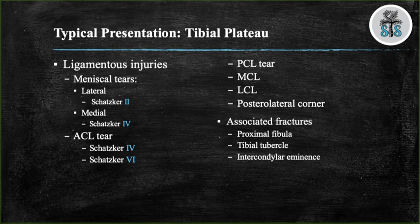ACL injuries are common with type 4 and type 6 tibial plateau fractures. The PCL, MCL, LCL, and posterolateral corner structures can be injured as well. The posterolateral corner structures are the LCL, popliteus, popliteal fibular ligament, the lateral capsule, the arcuate ligament, the fabellofibular ligament, the biceps femoris, the IT band, and the lateral head of the gastrocnemius. Tibial plateau fractures are also associated with fractures of the proximal fibula, tibial tubercle, and intercondylar eminence.